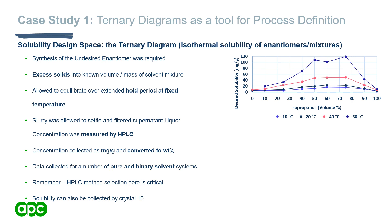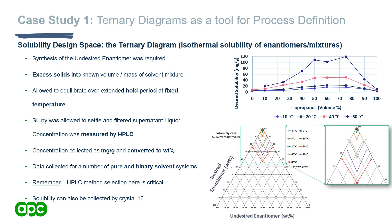To measure solubility, we add an excess of solids to a known volume of our chosen solvent, allow it to equilibrate, and sample the liquor by chiral HPLC. We calculate the concentration in mg/g of each enantiomer in the liquid, then convert to weight percent and plot on our ternary phase diagram. As this is an enantiomeric system, we expect a simple eutectic point at a 50:50 mixture. In case study two I'll present a diastereomeric system showing an unsymmetrical ternary phase diagram.